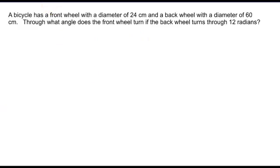This last problem is a little trickier. It says you've got a bicycle that's got a front wheel with a diameter of 24, and a back wheel with a diameter of 60. So, if that's the case, you've got some kind of situation like this, and rather than using diameters, let's go ahead and call these radii.